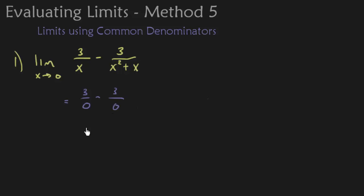Both of these are undefined. So we have an undefined minus an undefined which doesn't really tell us anything, plus we really can't deal with 3 over 0 in the first place. So Method 1 is not going to work.